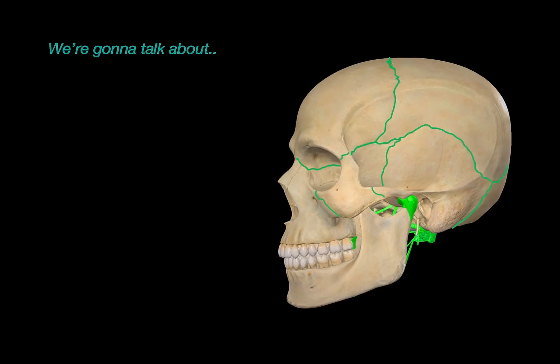In this video, we will first look at the developing skull, go through the fontanelles, and highlight the differences between a newborn and an adult skull. Then we'll walk through the joints of an adult skull by dividing them into two types.